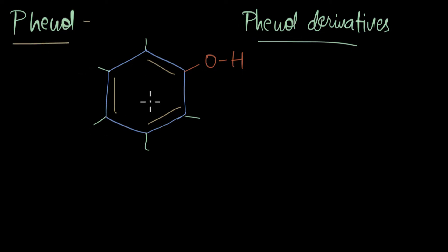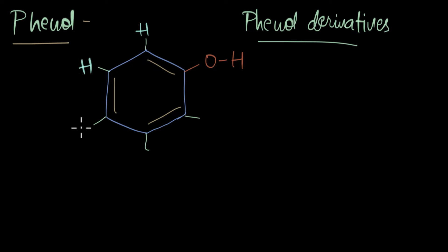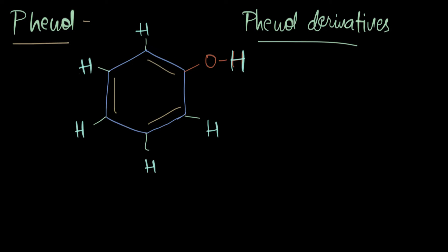To check the acidic strength of phenol, we need to identify the most acidic hydrogen. All five positions of benzene will have a hydrogen, and the sixth hydrogen is attached to the hydroxyl group. In previous videos we studied how oxygen and hydrogen have a huge electronegativity difference, because of which oxygen develops a partial negative charge and hydrogen develops a partial positive charge.